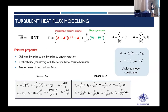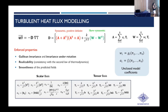The model developed is purely algebraic, with the heat flux given by the product of a dispersion tensor D with the mean temperature gradient. This dispersion tensor D is written as the sum of a symmetric positive-definite part plus a skew-symmetric part to be consistent with the second law of thermodynamics. In turn, these two tensors A and W are written as finite expansion series of tensors to satisfy the property of invariance under rotation.